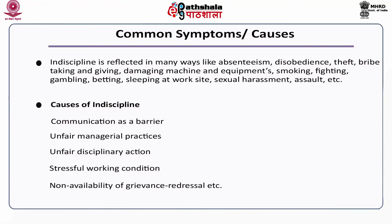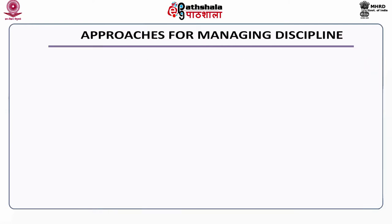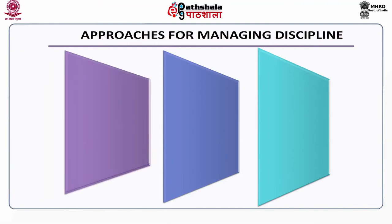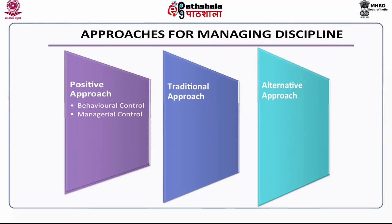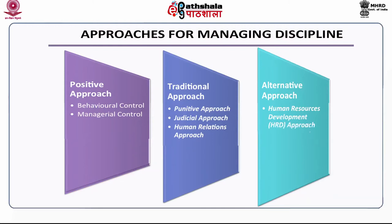Looking at the various approaches for managing discipline, we have three sets of approaches. One is a positive approach, second is the traditional approach, and third is alternative approaches to manage indiscipline. The positive approach has two options: behavioral control and managerial control. The traditional approach has three frames: punitive approach, judicial approach, and human relations approach. With respect to the alternative approach, we have the HRD approach, group dynamics approach, leadership approach, and intervention skills.